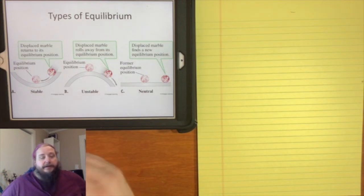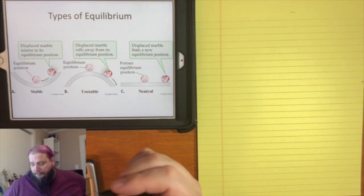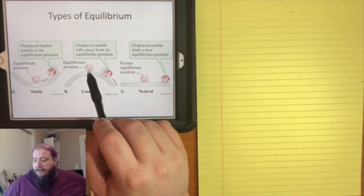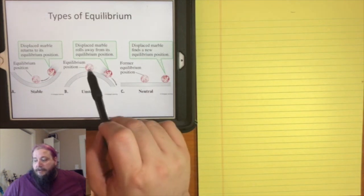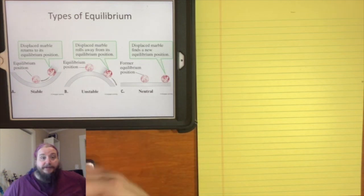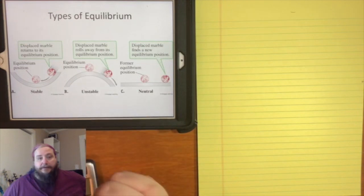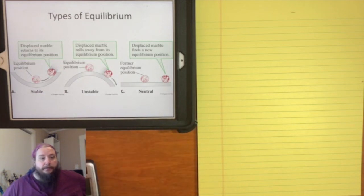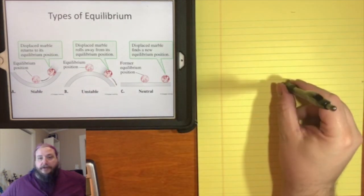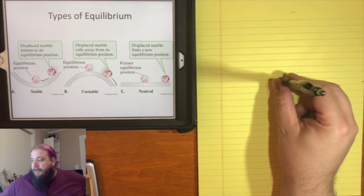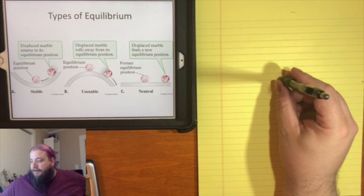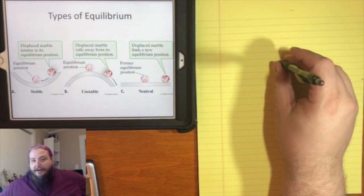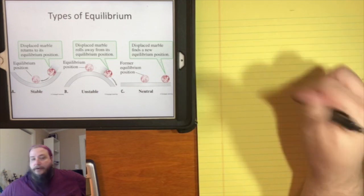For things like buildings and bridges, you tend to want stable equilibrium. The other option is unstable equilibrium — if you stick a marble on top of a concave-down structure and push it a little out of the equilibrium position, it's going to run away. For instance, if I try to balance a pen on its tip, I could probably find an unstable equilibrium, but the slightest little wiggle of the desk or air in the room would knock it over.